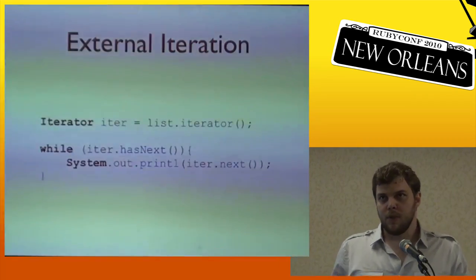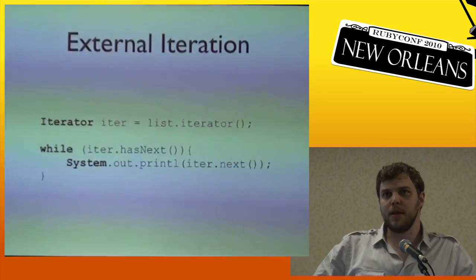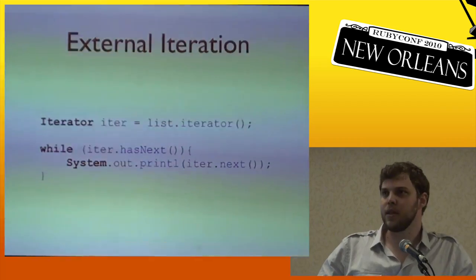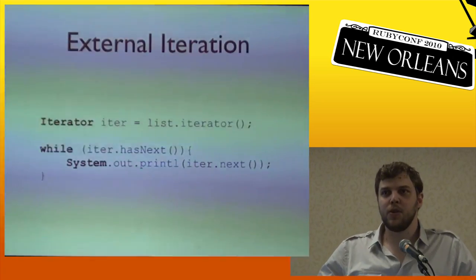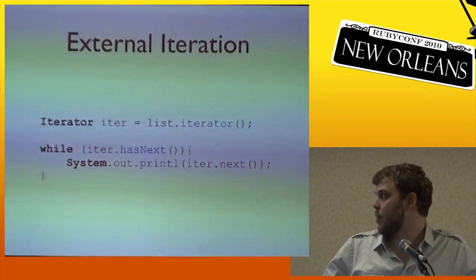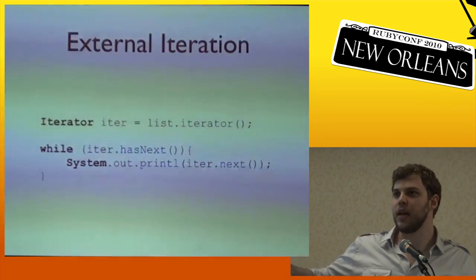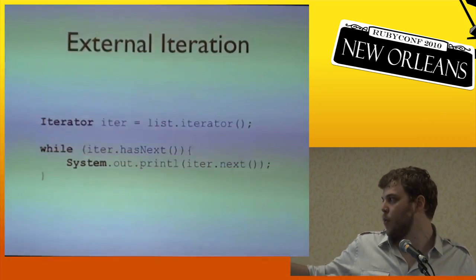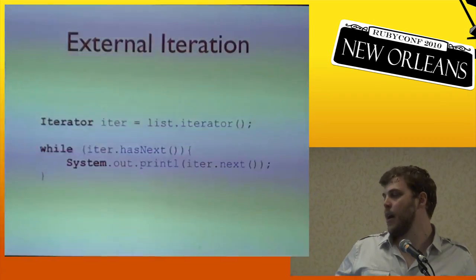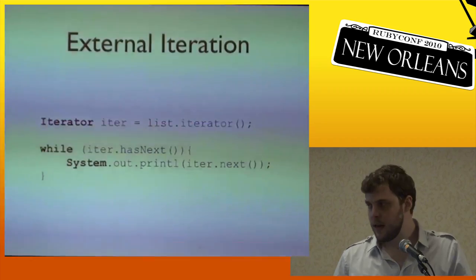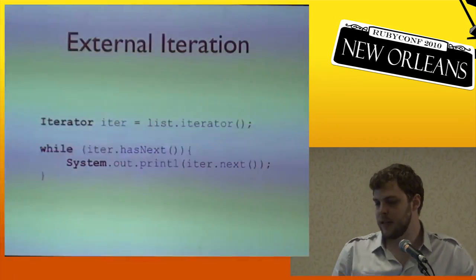External iteration is a concept you're probably all familiar with — this is Java. Java didn't create external iteration, but it's probably the place you've seen it most often. External iteration is iterating over an object by using an object external to that object to provide the iteration. This iterator object is aware of how to take a list and get the next object in sequence. While there is a next object, iterate by taking the next object and continue.